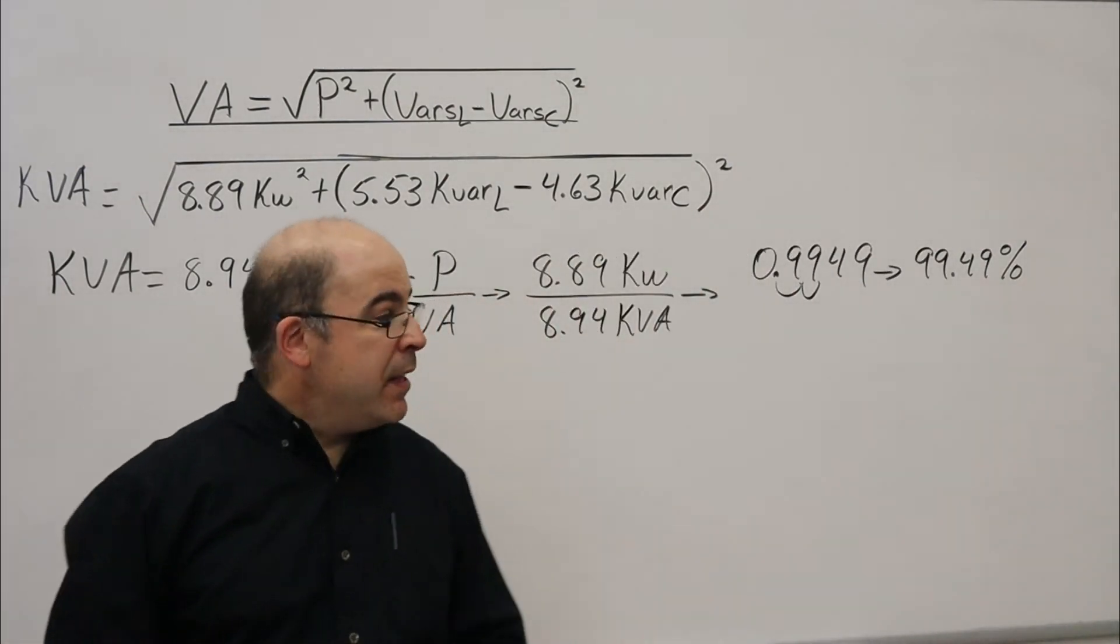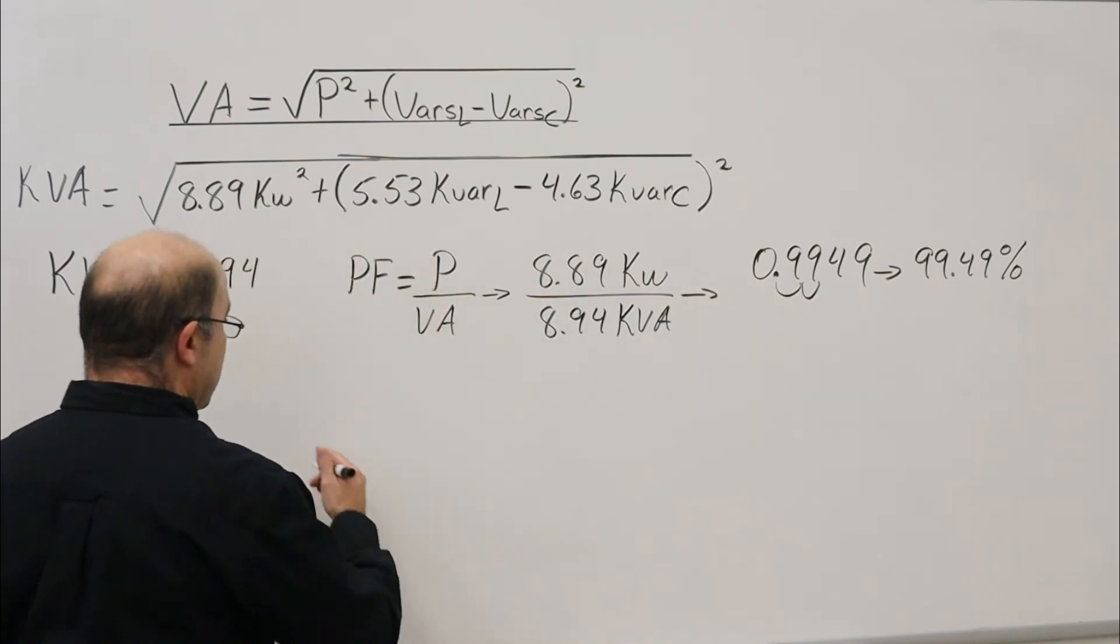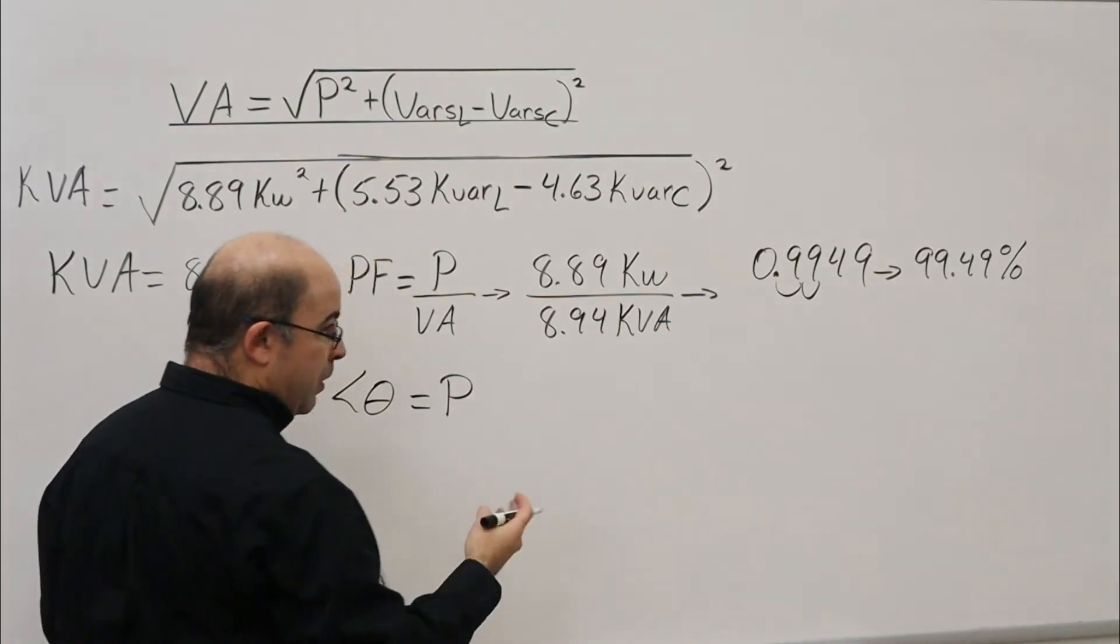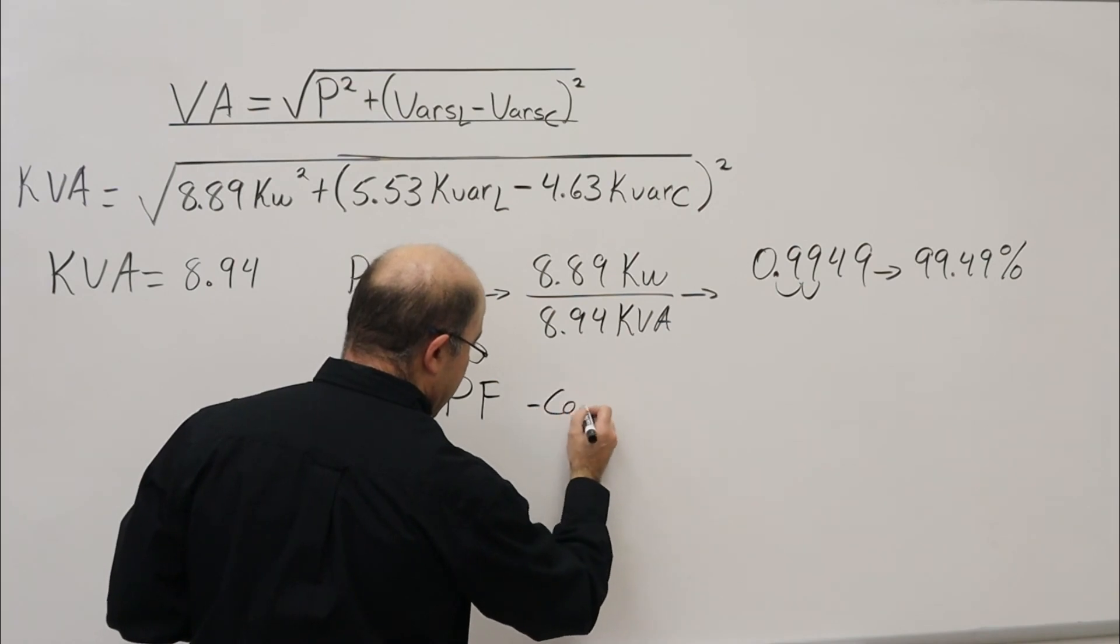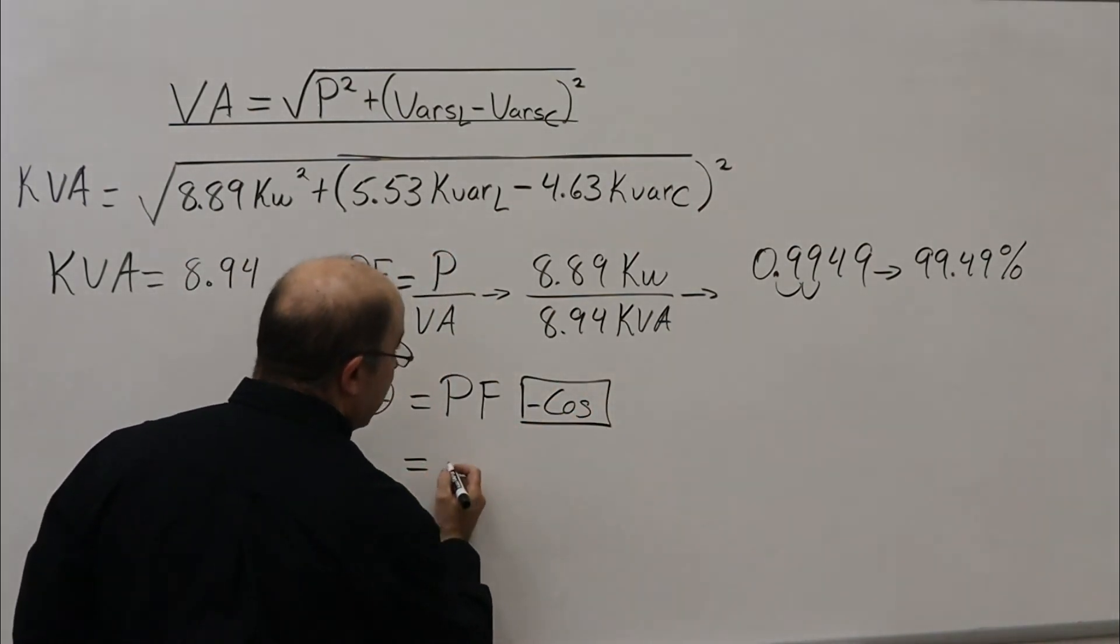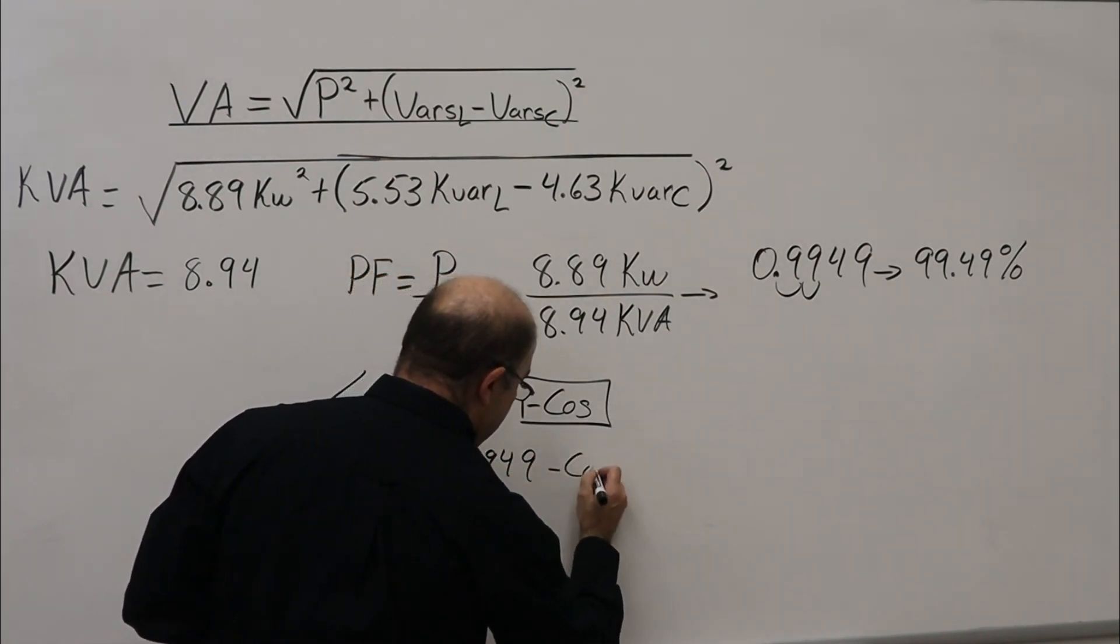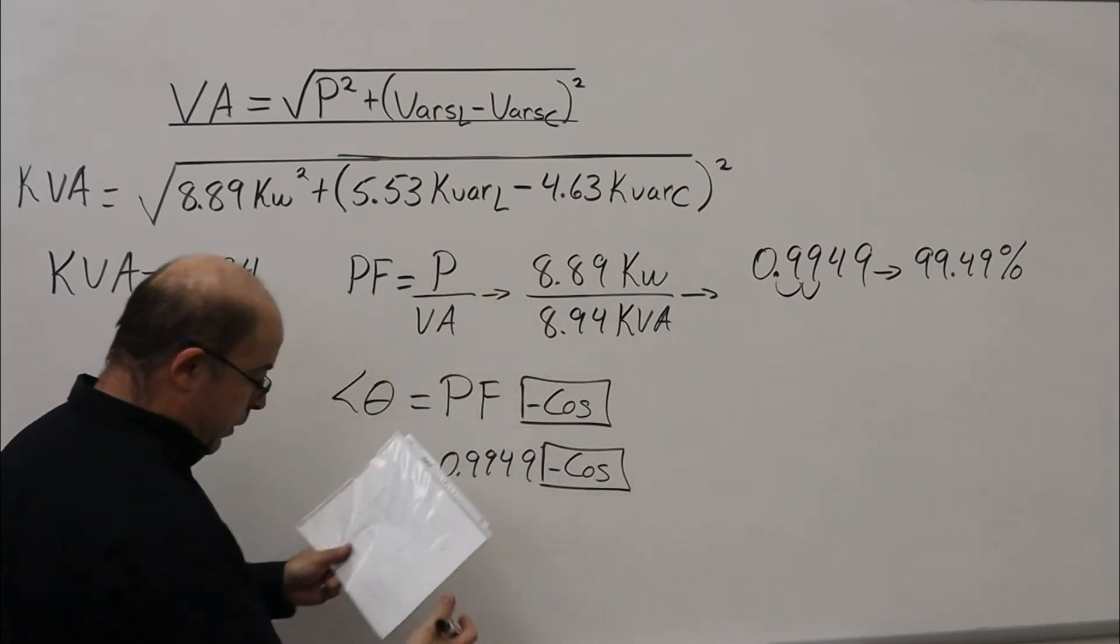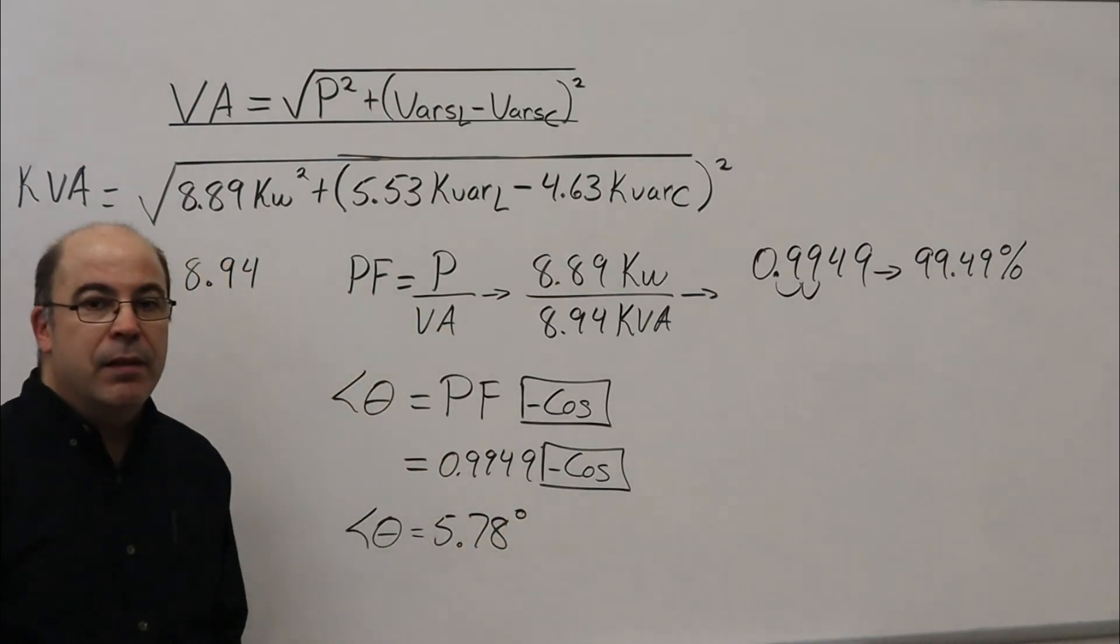For angle theta, with that value still in the calculator—0.9949—it's a simple matter of pressing inverse cosine. Inverse cosine of 0.9949 gives us angle theta of 5.78 degrees.